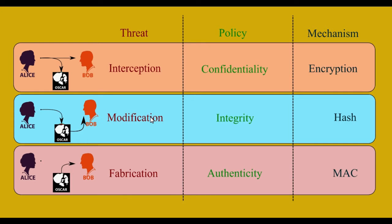The next threat is modification. Say you are communicating some confidential or sensitive message, and a third party captures that message in between on the route and changes it however they want, then delivers that modified message to the receiver. The receiver thinks it came from you.